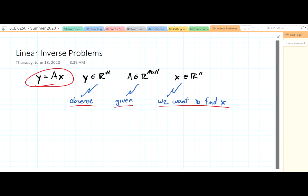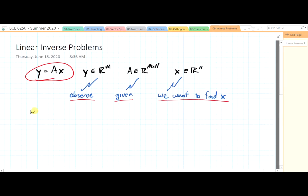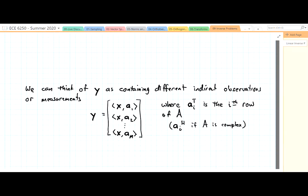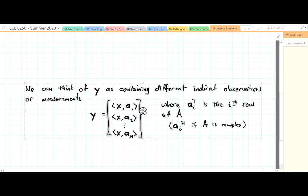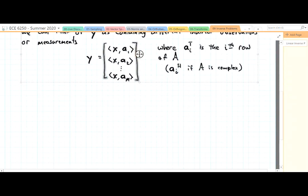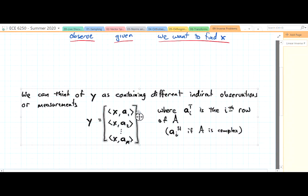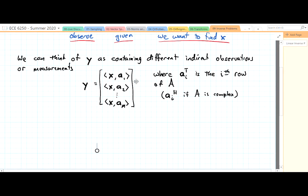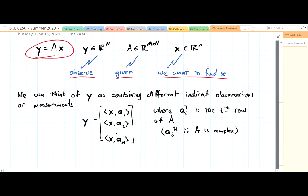So we can think of y as containing different indirect observations or measurements. In other words, we're not looking at x directly. We're looking at some function of x. It also could be a noisy version of x. We'll get into that as well later.